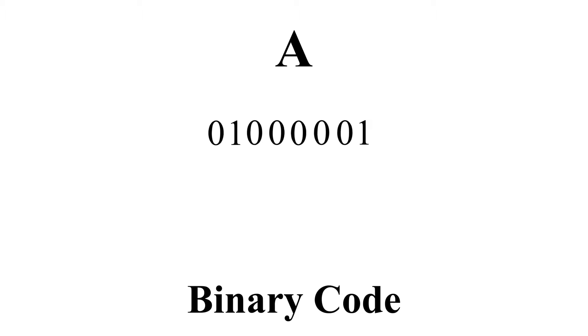Here is the letter A — capital A — shown in binary code form: 0, 1, 0, 0, 0, 0, 0, 1.